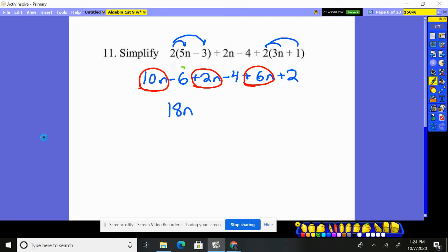Now I need to put together lose 6, lose 4, gain 2. Well if you lose 6 and then lose 4, you've lost 10, and then you gain 2 of it back, you're still in the hole 8. So it's 18n minus 8.